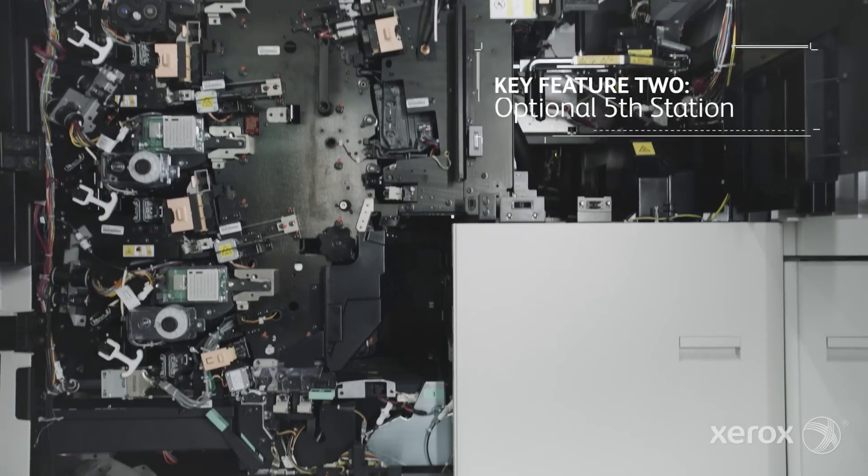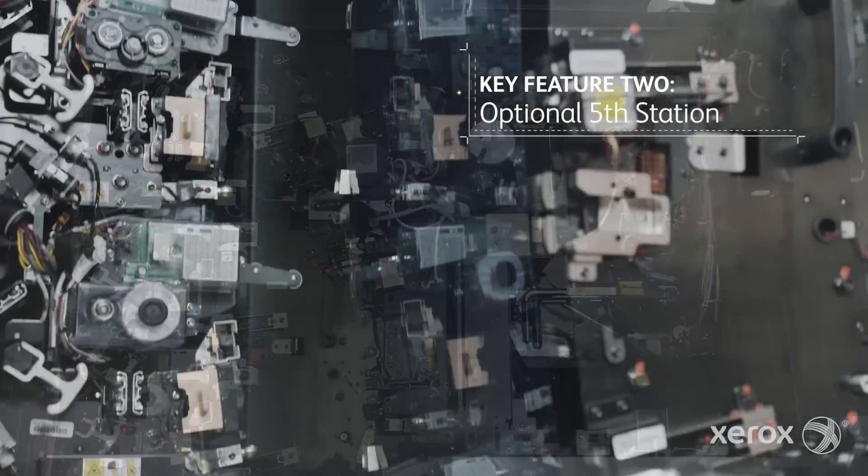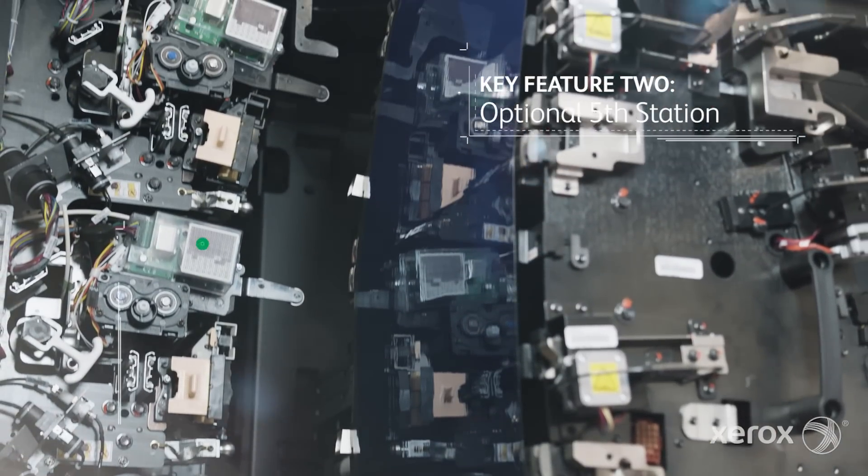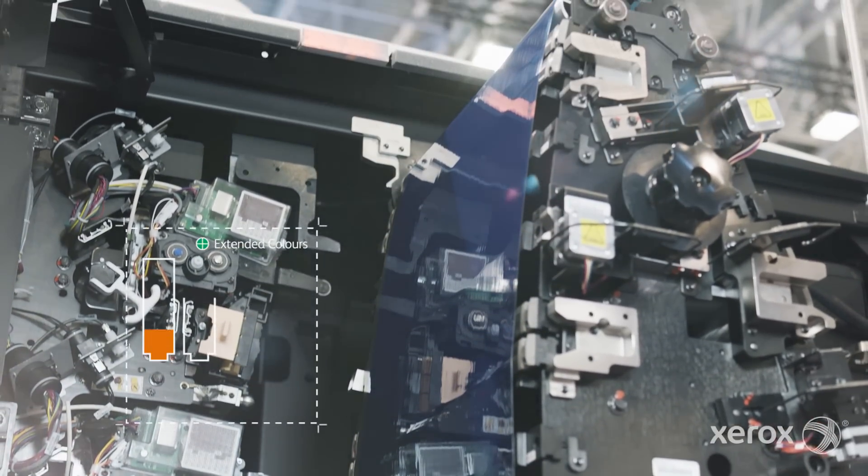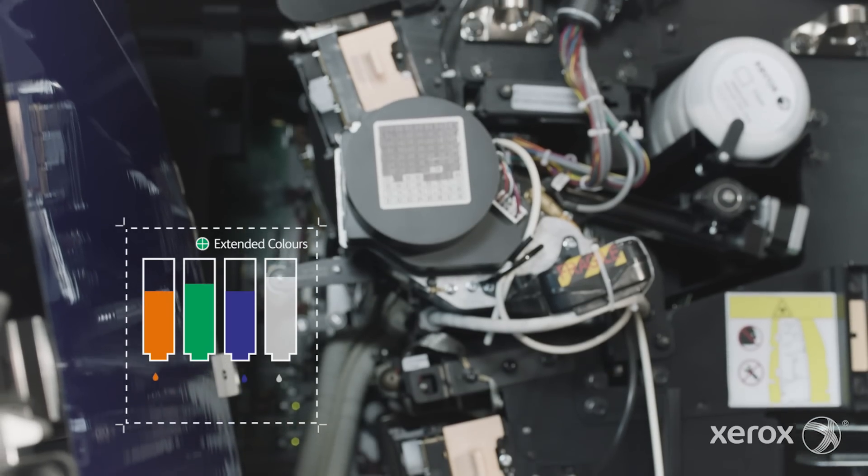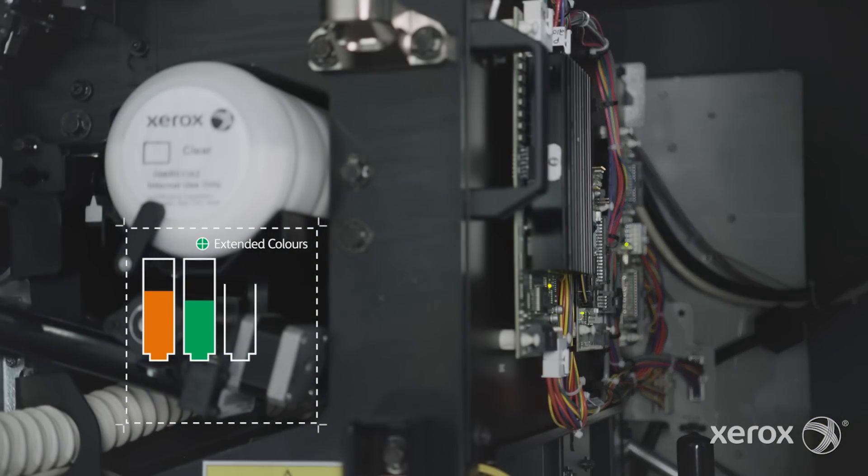The second key feature of the iGen5 is the optional fifth station. We launched the iGen5 with three gamut extension colors: orange, green, and blue. And now we're offering clear dry ink, which will allow you to enhance your prints and add more value.